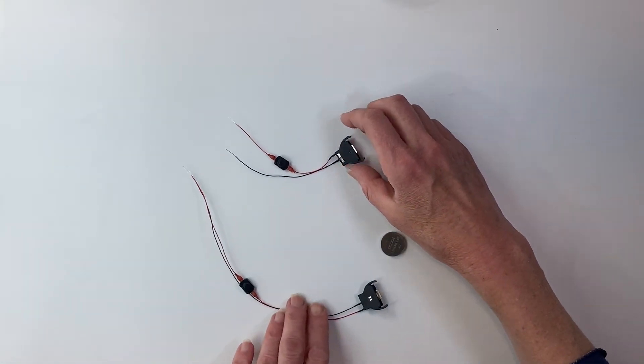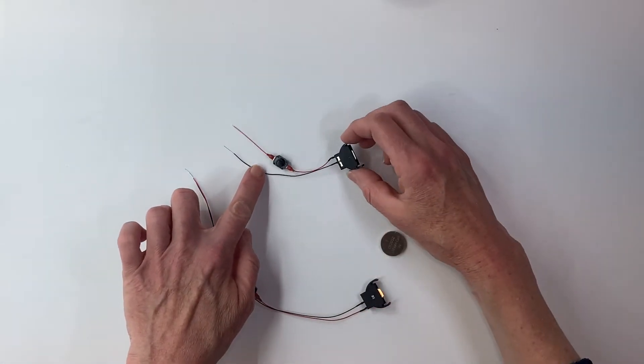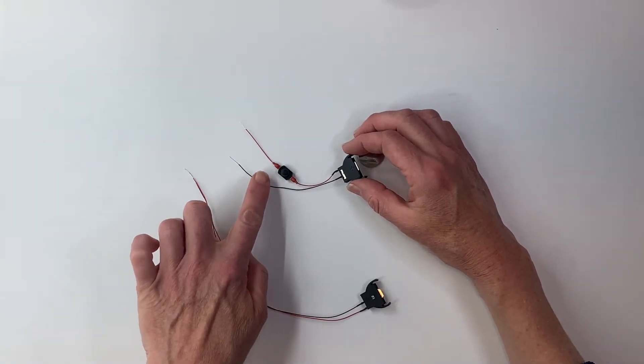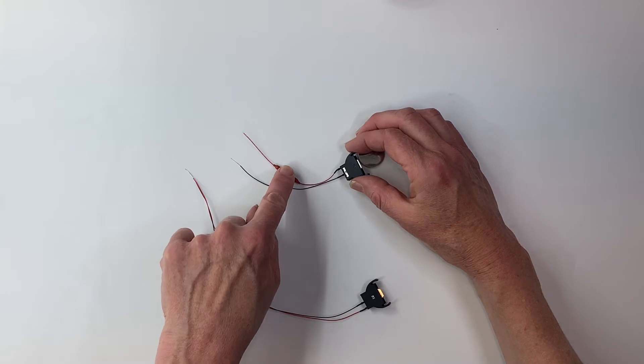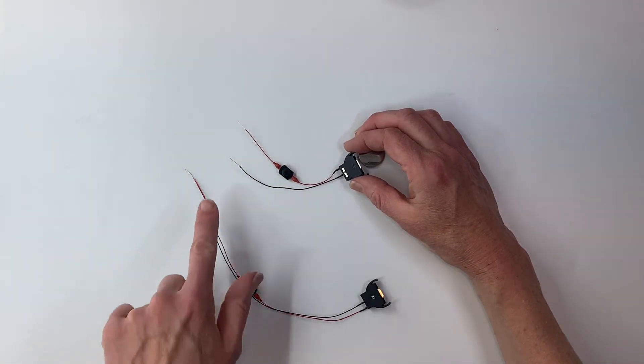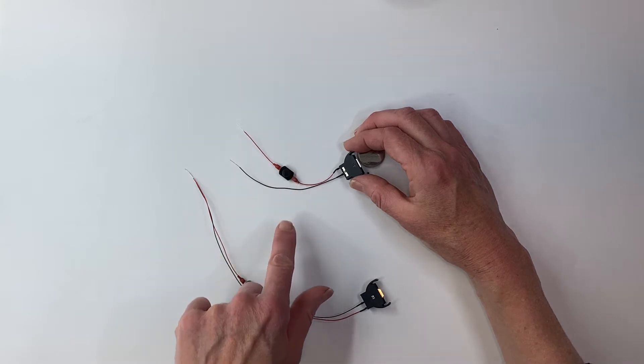This is our coin cell holder with switch. You can see that this is meant to hold a small coin cell and it also has an on-off switch. So if I press the switch once, my lights will be on and they'll stay on until I press it again to turn them off.